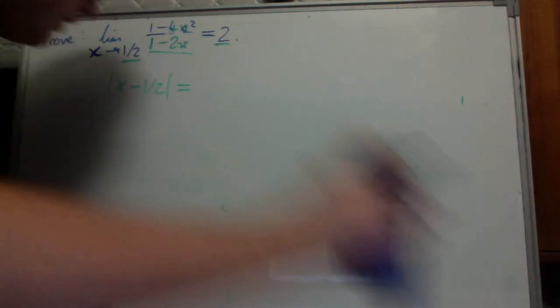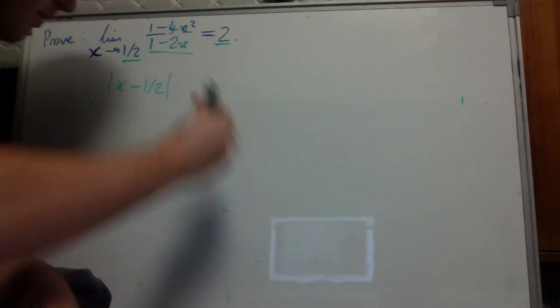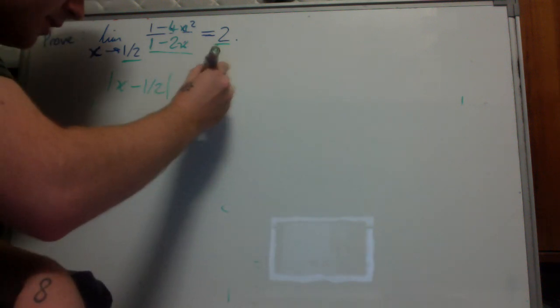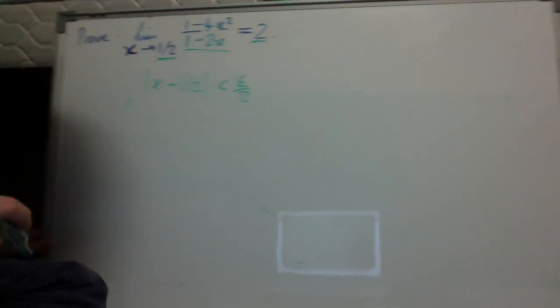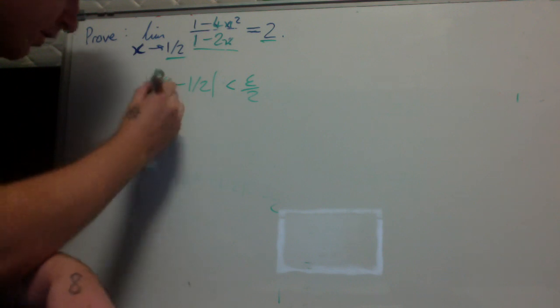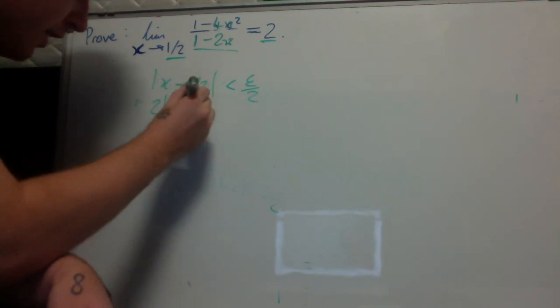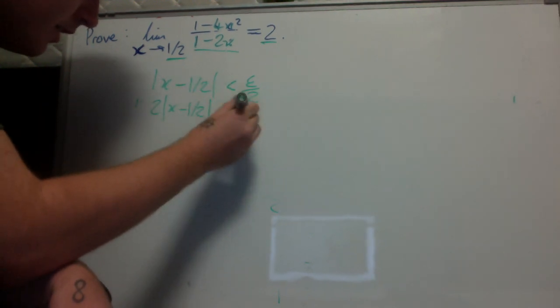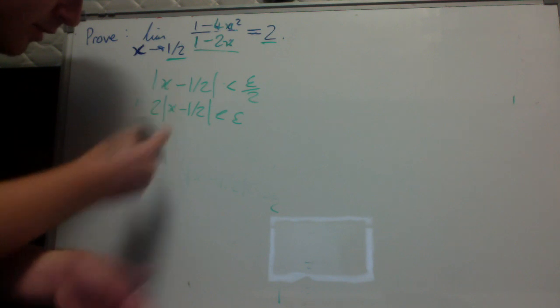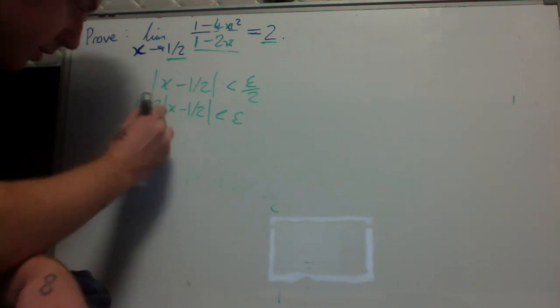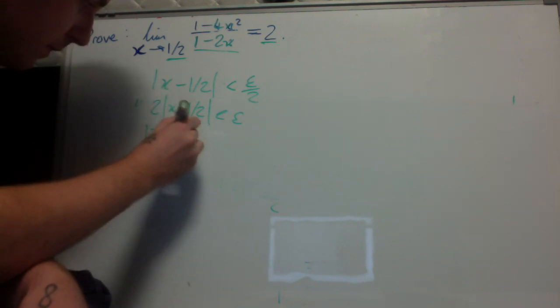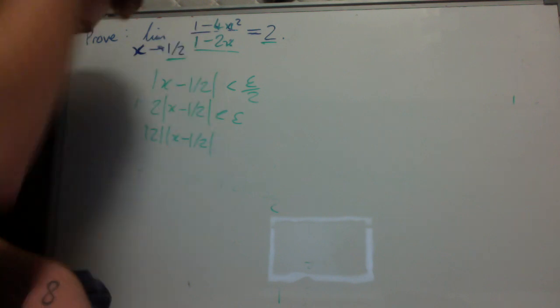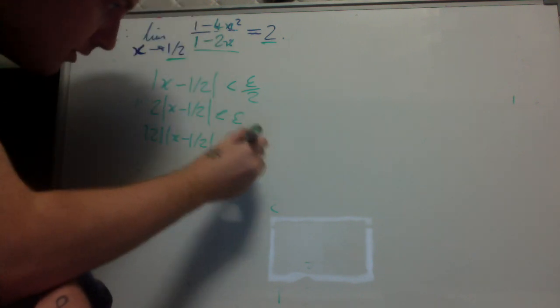You definitely want that less than epsilon, right? That's over two. Multiply by 2: |2x - 1/2| < epsilon. The absolute value of 2 is 2.